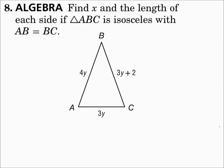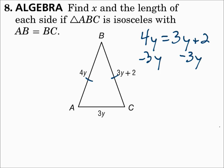Number 8: find x and the length of each side if triangle ABC is isosceles with AB equal to BC. Those are the two congruent sides. Since those are congruent, make their measures equal: 4y = 3y + 2. Subtract 3y from each side to get y = 2.